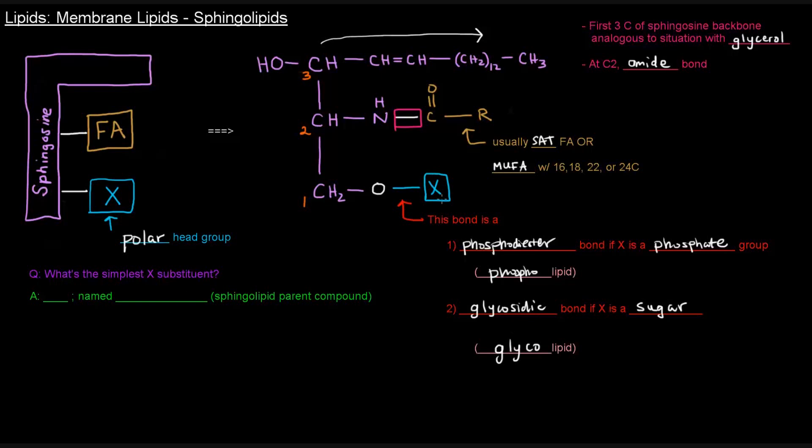Now, what is the simplest substitution that we could have for X? What if it's neither of these? What if there's no phosphate and there's no sugar portion? What if it's just an H? Well, then you have what's called the parent compound of the sphingolipid and its name is ceramide.